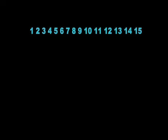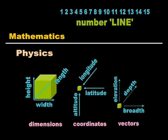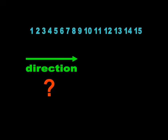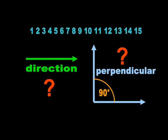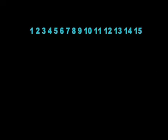A number line differs from the dimensions, coordinates, and vectors of physics in that it has neither direction nor orthogonality. In order to get around this limitation, the mathematicians adopted the bad habit of placing a geometric line above the numbers. They call this incongruous blend a number line.